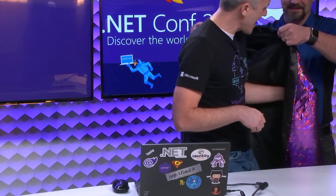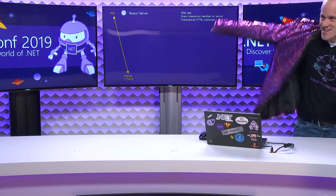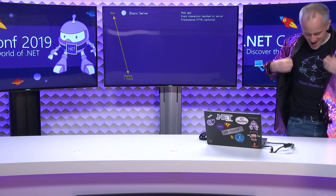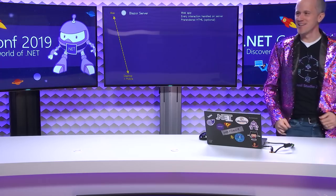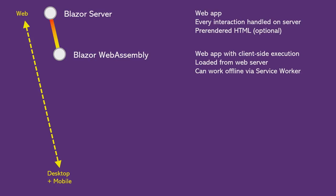Someone just brought me a blazer — I've got to look the part! The Blazing Blazer. All right, we're going to blaze on now. So what's the next step on adding more native-like capabilities to our Blazor application? Well, the next step is Blazor WebAssembly.